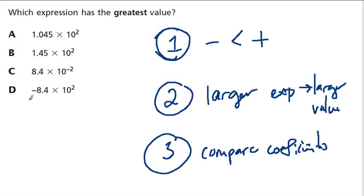So here the only negative number is negative 8.4 times 10 to the second. That just equals negative 8.4 times 100, which is negative 840. That's the smallest number here. That's out. We're looking for the greatest.